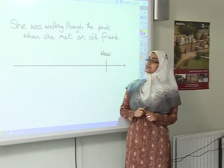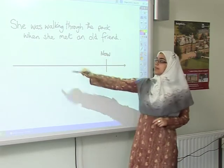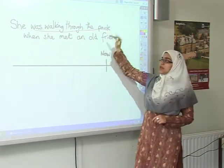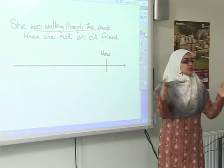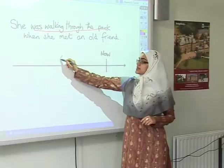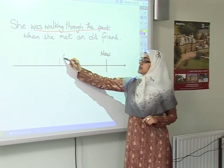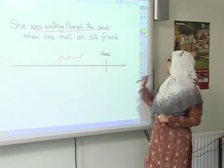Let's look at this sentence: 'She was walking through the park.' Was walking through the park — when did that happen? In the past. Was it a short action or a long action? Long action. So it started here and goes on for a long time.